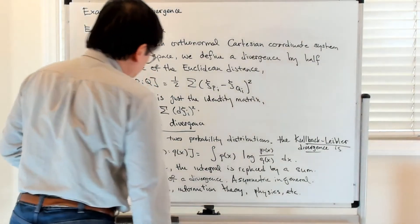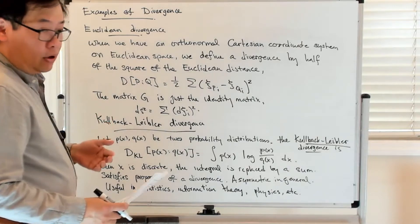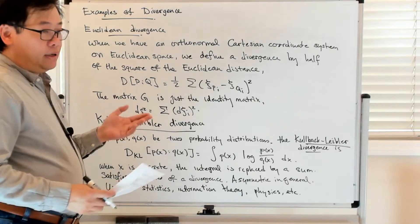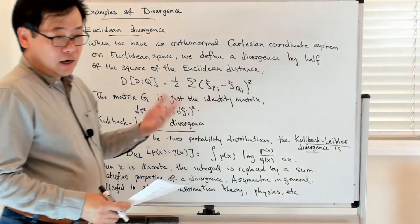So for probability distributions, you can also look at the set of what are called positive measures. The distinction between the set of positive measures and the set of probability distributions is that